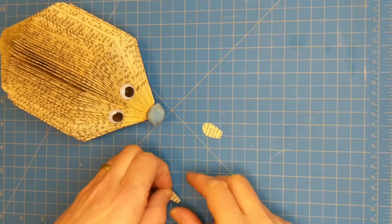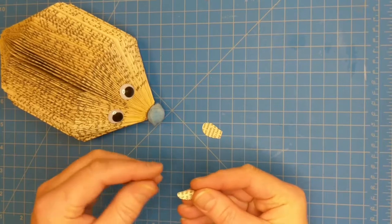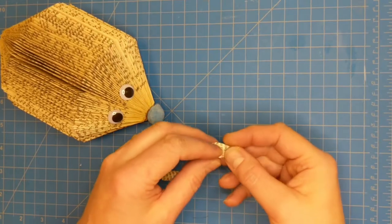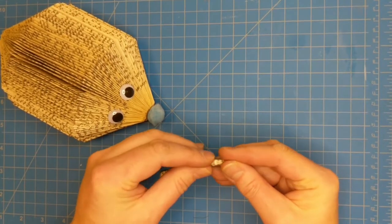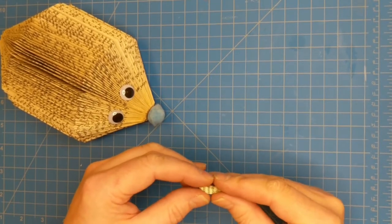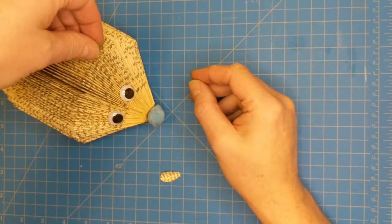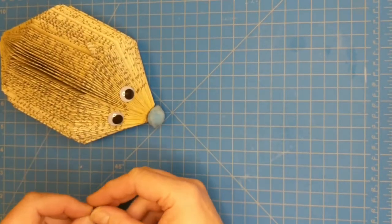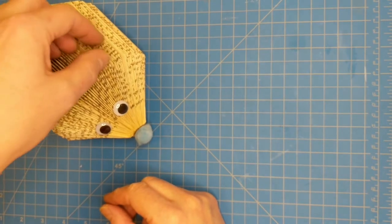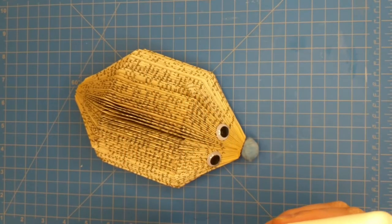And we're just going to take our ears and curl them a little bit. Curl them the long ways. And we're going to pinpoint where we think they should go, just outside his eyes a little bit. And then glue those in right at the point of the fold.